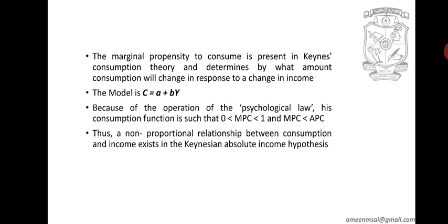The marginal propensity to consume is present in Keynes' consumption theory, and it determines by what amount consumption will change. MPC — marginal propensity to consume — determines the amount of income that we use for consumption. The rest is the MPS, the marginal propensity to save; the rest of the income will be saved. The model is: C is equal to A plus B times Y.